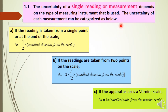The uncertainty of a single reading or measurement depends on the type of measuring instrument used. The uncertainty of each measurement can be categorized as follows: if the reading is taken from a single point or at the end of the scale, the uncertainty is half of the smallest division from the scale. If the readings are taken from two points on the scale, the uncertainty is the smallest division from the scale. If the apparatus uses a vernier scale, the uncertainty is the smallest unit from the vernier scale.